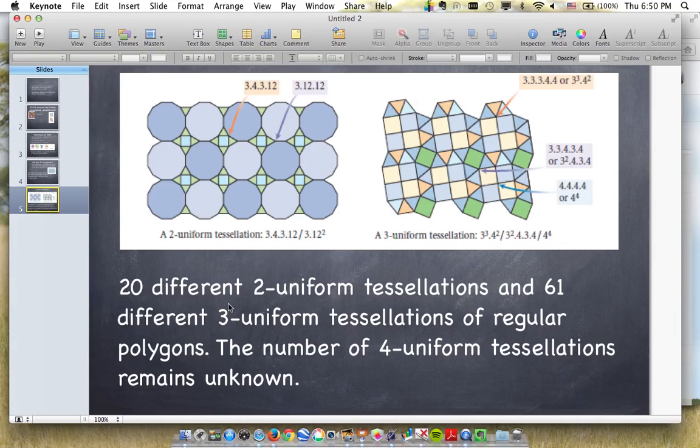Now, geometry philosophers have studied and found that there are 20 different two-uniform tessellations and 61 different three-uniform tessellations that can be made from regular polygons. Again, these are polygons that are not limited to just triangles, squares, and hexagons. They could include dodecagons, decagons, octagons, heptagons, any regular polygon that are possible. And then the number of four uniform tessellations is still an unknown mystery. It has yet to be solved.